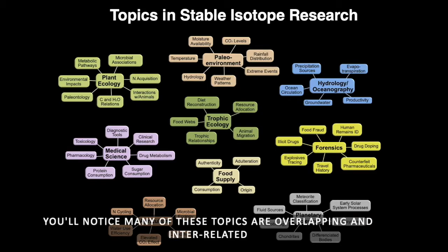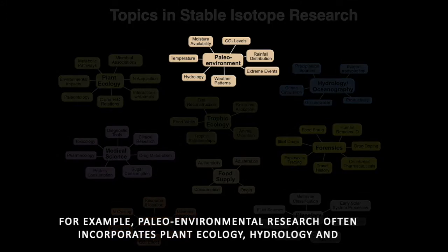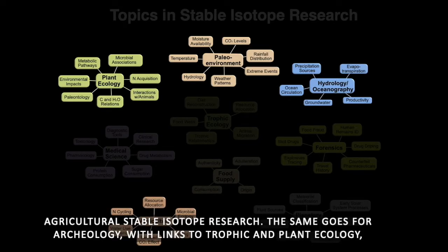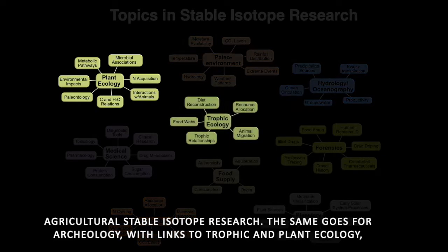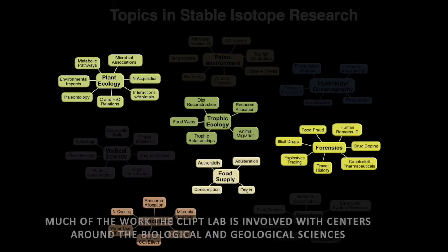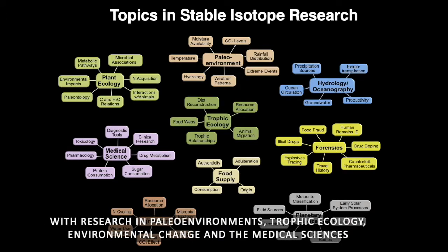You'll notice many of these topics are overlapping and interrelated. For example, paleo-environmental research often incorporates plant ecology, hydrology, and agricultural stable isotope research. The same goes for archaeology, with links to trophic and plant ecology, agriculture, food science, and forensic identification. Much of the work the CLIPT lab is involved with centers around the biological and geological sciences, with research in paleo-environments, trophic ecology, environmental change, and the medical sciences.